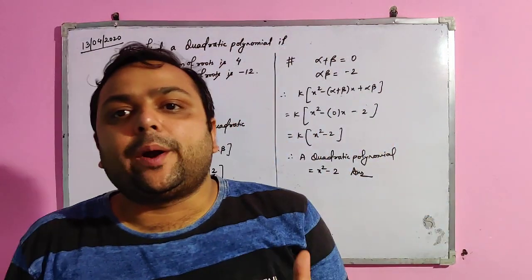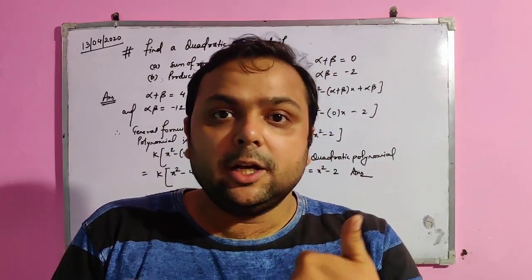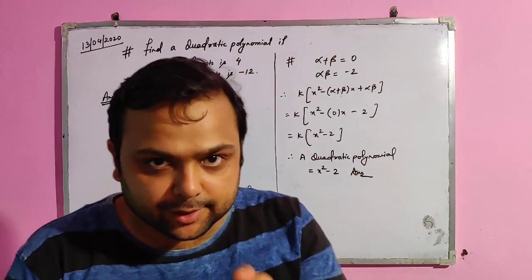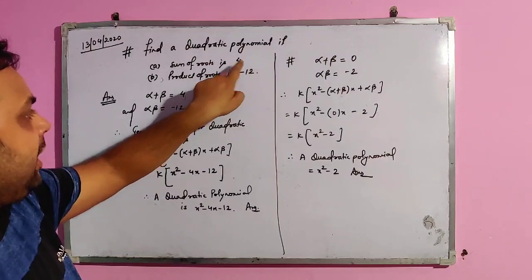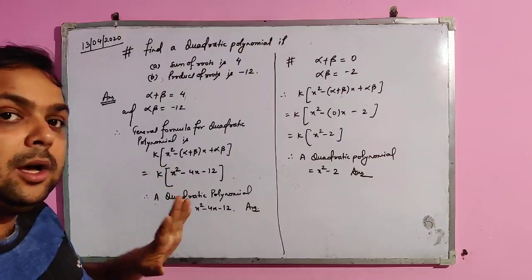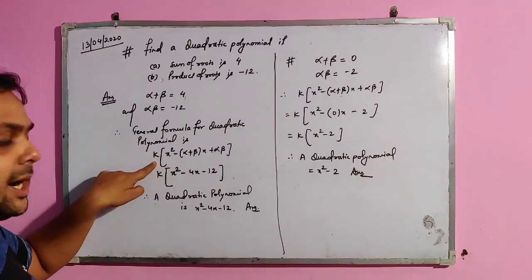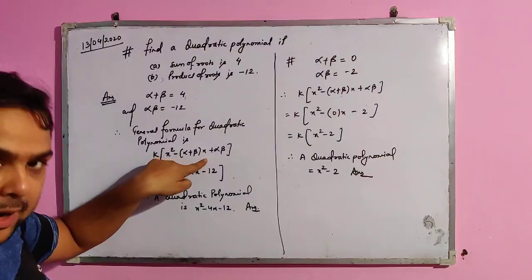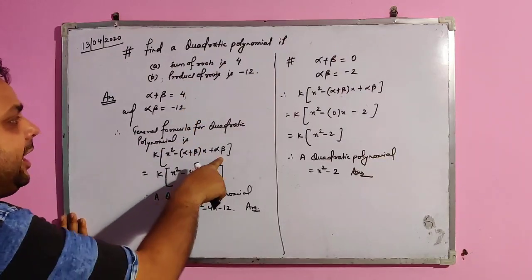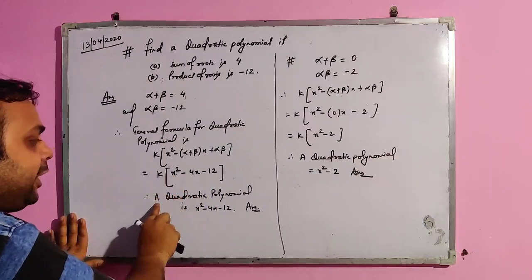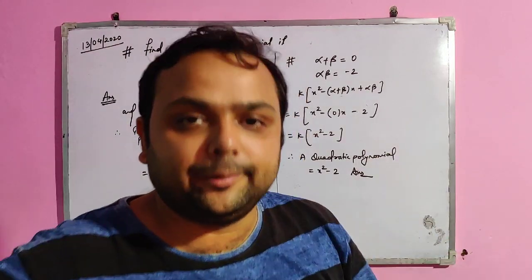Now I will show how to find a quadratic polynomial when the sum and product of roots are given. The general formula is: k[x² − (α + β)x + αβ], where k is a constant. Example 1: if α + β = 4 and αβ = −12, substituting gives k(x² − 4x − 12). We can make many polynomials by putting k = 1, 2, 3, and so on. Example 2: if α + β = 0 and αβ = −2, substituting gives k(x² − 2).